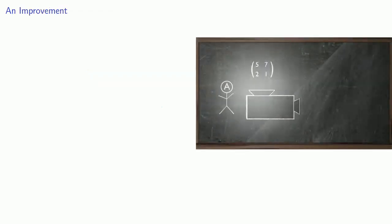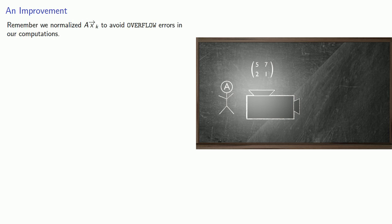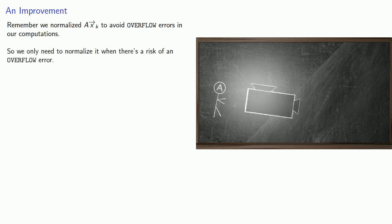We should always consider the possibilities for improvement. Remember, we normalized Axk to avoid overflow errors in our computations. So really, we only need to normalize it when there's a risk of an overflow error.